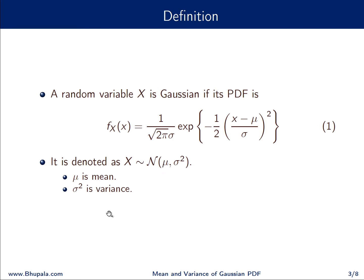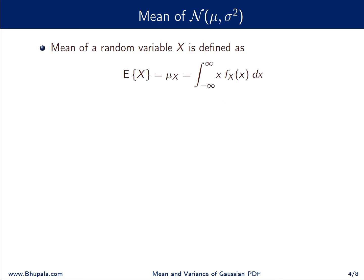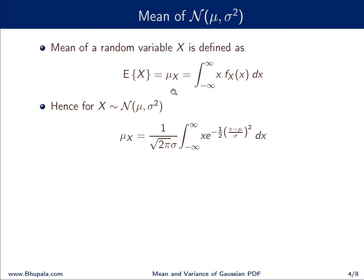We will prove that the mean of this Gaussian random variable is μ and the variance is σ². First, let us evaluate its mean. For any random variable X, we define the mean as E[X] = μ_X = ∫_{−∞}^{∞} x · f_X(x) dx, where E denotes expectation and μ_X is another notation for the mean.